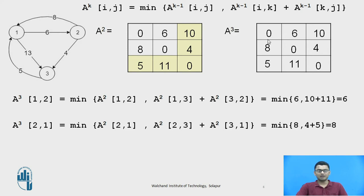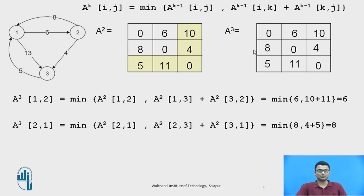This is the final matrix. 1-to-2 is 6, 1-to-3 is 10. We see that 1 to 3 had a direct edge of weight 13, but going 1-to-2 (cost 6) then 2-to-3 (cost 4) gives a shorter path of 10. Similarly: 2-to-1 is 8, 2-to-3 is 4, 3-to-1 is 5, and 3-to-2 is reduced to 11. This is the final matrix giving the minimum weight between any two pair of nodes.